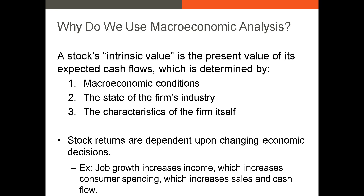The answer is that a firm's intrinsic value, or underlying value, should be the present value of its expected discounted cash flows. Those cash flows depend on macroeconomic conditions as well as industry conditions and the firm's position in the industries where it operates. If macroeconomic conditions change, a firm or an industry's ability to generate profits could increase or diminish. So we need to understand both current and possible future macroeconomic conditions in any market that could impact a firm's cash flows.